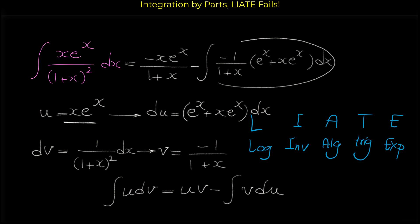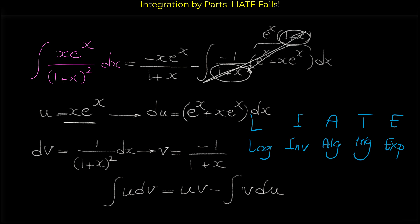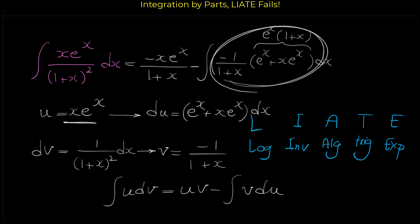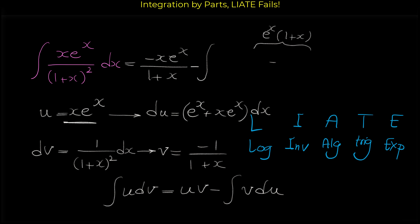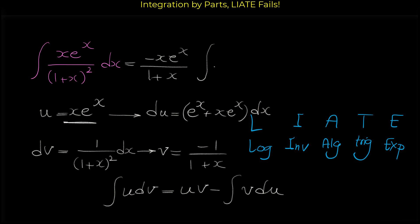Now you might wonder how we can find this complicated integral. If you look at the bracket, you can factor out e to the x, and then you have 1 plus x. The 1 plus x in the bracket and the 1 plus x in the denominator cancel each other. So what remains is only negative 1 and e to the x. The two negatives cancel, leaving plus e to the x dx.